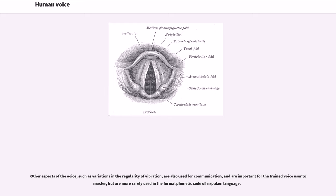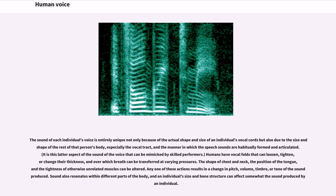Other aspects of the voice, such as variations in the regularity of vibration, are also used for communication and are important for the trained voice user to master, but are more rarely used in the formal phonetic code of a spoken language. The sound of each individual's voice is entirely unique not only because of the actual shape and size of an individual's vocal cords but also due to the size and shape of the rest of that person's body, especially the vocal tract, and the manner in which the speech sounds are habitually formed and articulated.